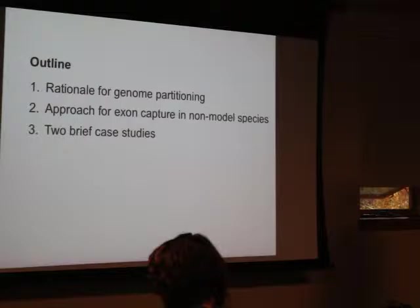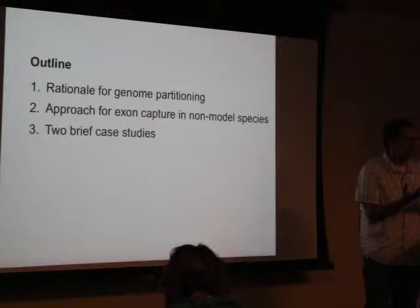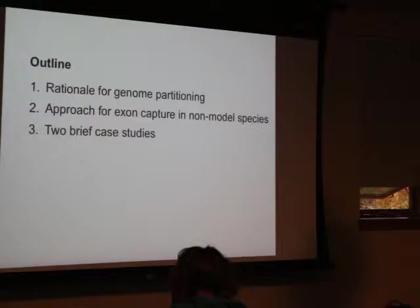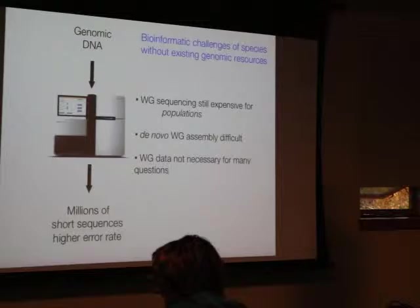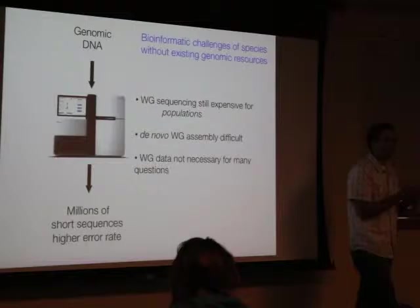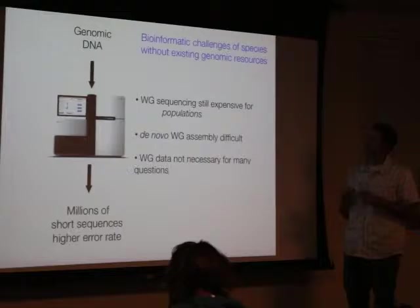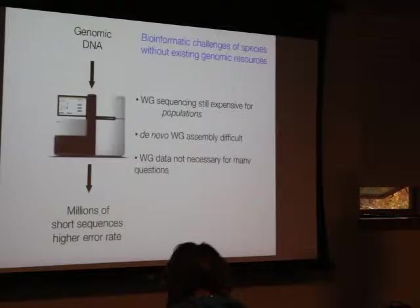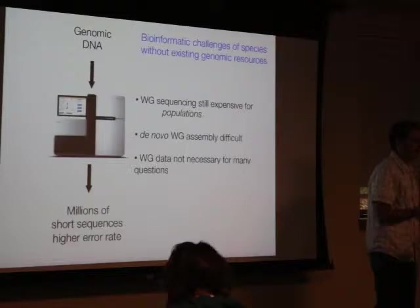What I want to talk about is genome partitioning in general — any approach that takes the genome and reduces it down into smaller subsets. There are lots of ways to do this. You've heard a lot about RAD sequencing already, which is probably the predominant approach used in conservation and ecological genetics. I'll focus on exon capture today, which is an alternative approach with its own costs. I'll give you two brief case studies illustrating the kinds of questions you can answer and how to develop these tools in non-model species.